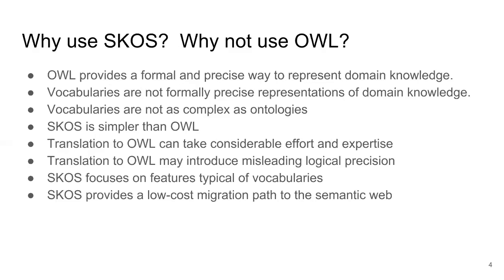If done incorrectly, conversion of a controlled vocabulary to an OWL ontology may introduce misleading logical precision. As an example, a vocabulary may use a broader term relationship indicated by BT. BT may indicate a generic, partitive or instantial relationship. The way in which BT has been used by the thesaurus may not be documented, and even if there are policies governing how BT should be used, these policies may not have been uniformly followed over time.